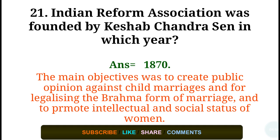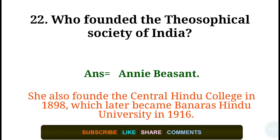Question number twenty-one: Indian Reform Association was founded by Keshav Chandra Sen in which year? Answer: 1870. The main objective was to create public opinion against child marriages and for legalizing the Brahmo form of marriage, and to promote the intellectual and social status of women. Question number twenty-two: Who founded the Theosophical Society of India? Answer: Annie Besant. She also founded the Central Hindu College in 1898, which later became Banaras Hindu University in 1916.